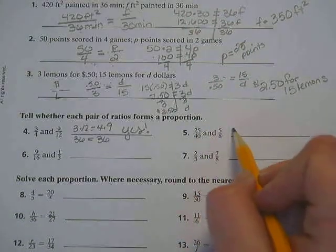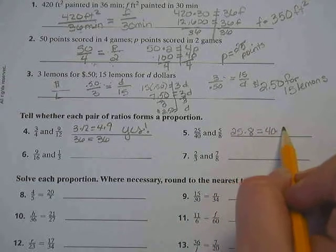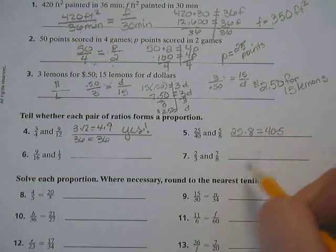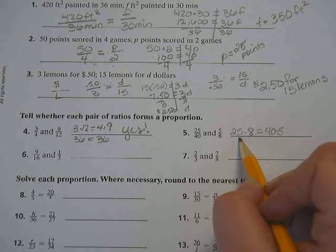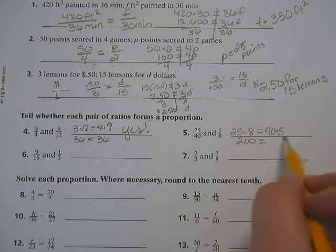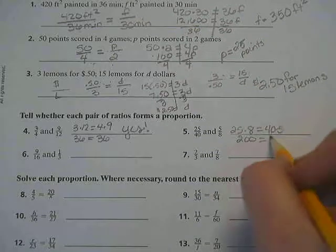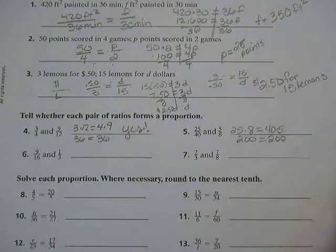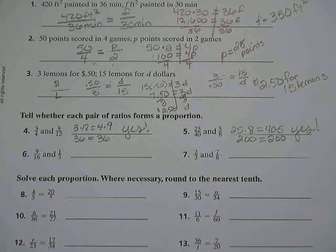Alright, let's look at number 5. 25 times 8. Does that equal 40 times 5? So think of it, if you have 8 quarters, how much money is that? 2 bucks. So 200. 40 times 5. So yes, that is a proportion.